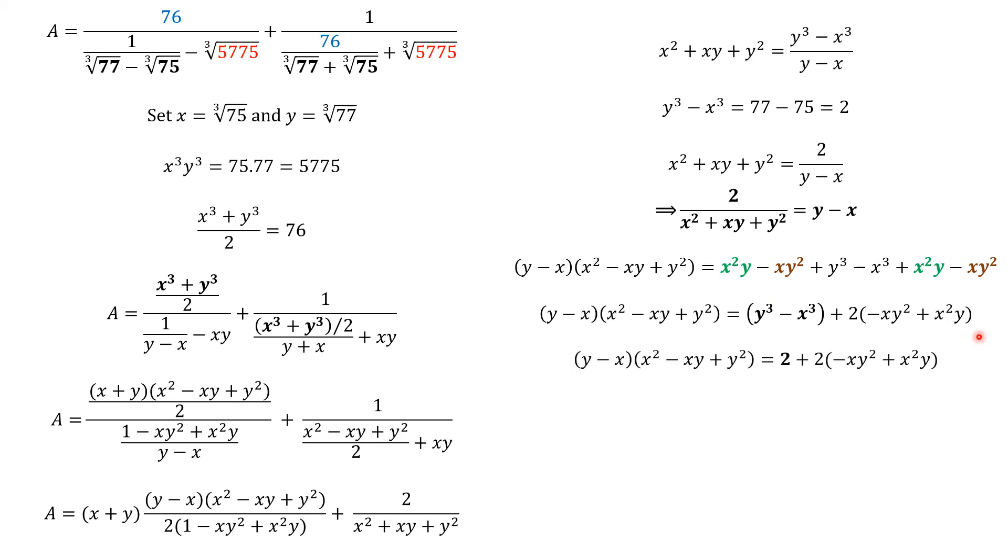We use the results, the outcome that we have here, since Y cube minus X cube is 2. We replace here by 2. We can factorize again by 2. And this multiplication equals 2 times 1 minus XY square plus X square Y. We rearrange again, and we see that this term here equals 1.